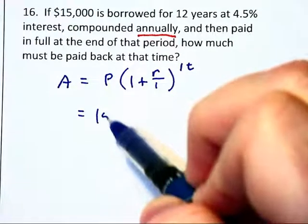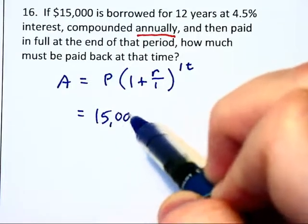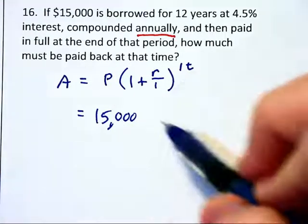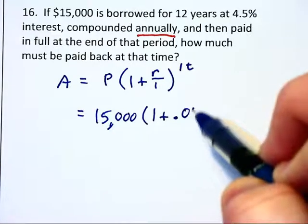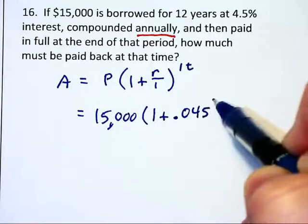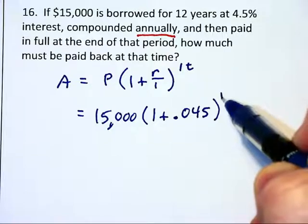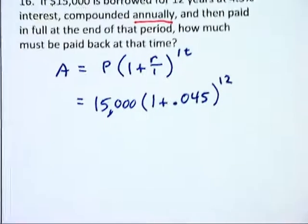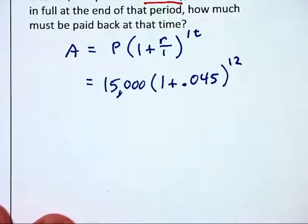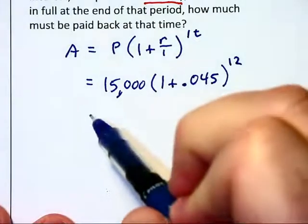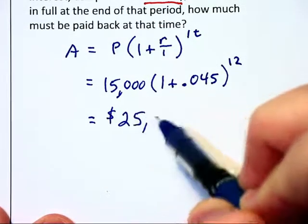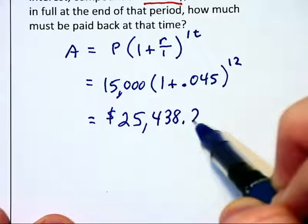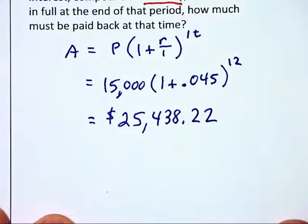We are borrowing $15,000 and we are going to have 1 plus .045 all raised to the 1 times 12 power. Well, you are going to enter this into the calculator just as we had earlier, and this should come out to be $25,438.22 when you round to the nearest penny.